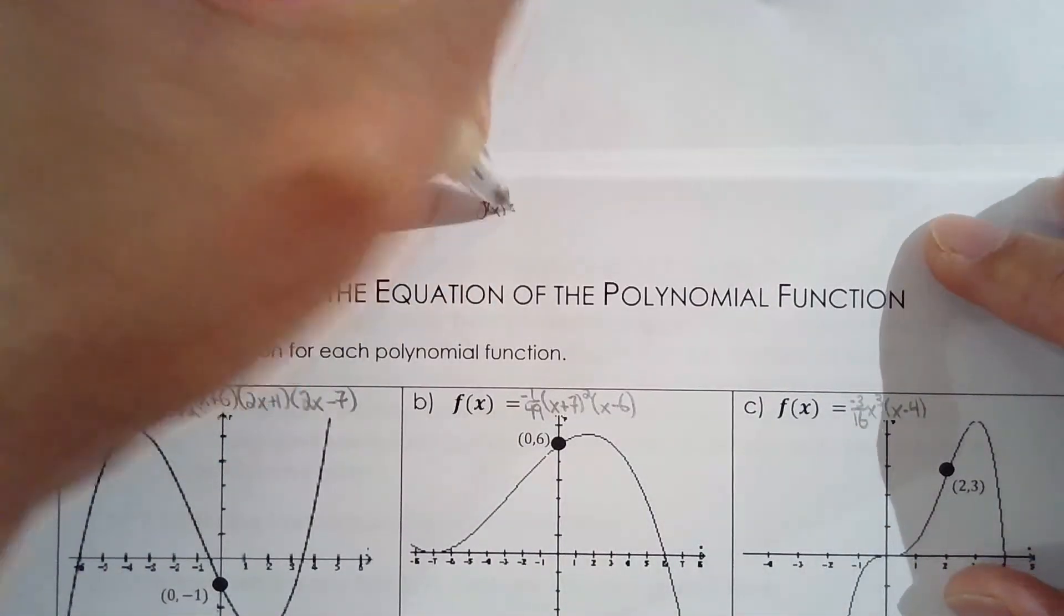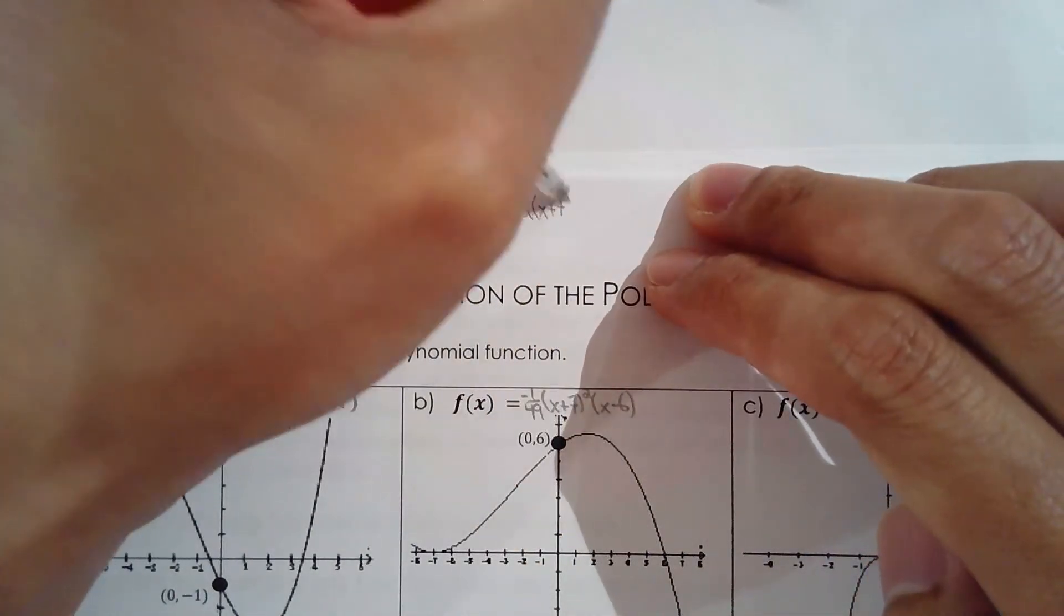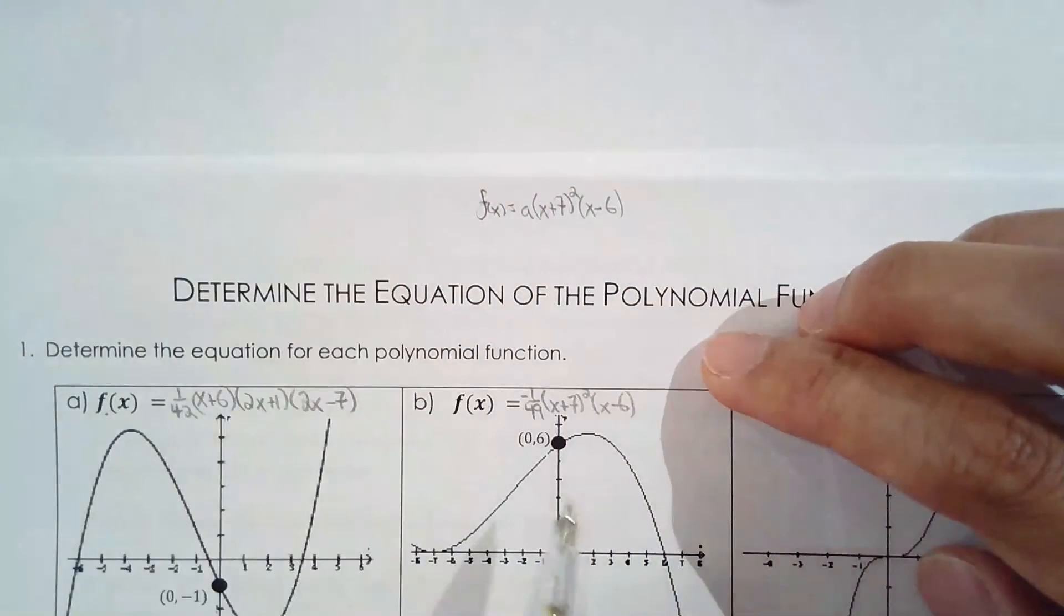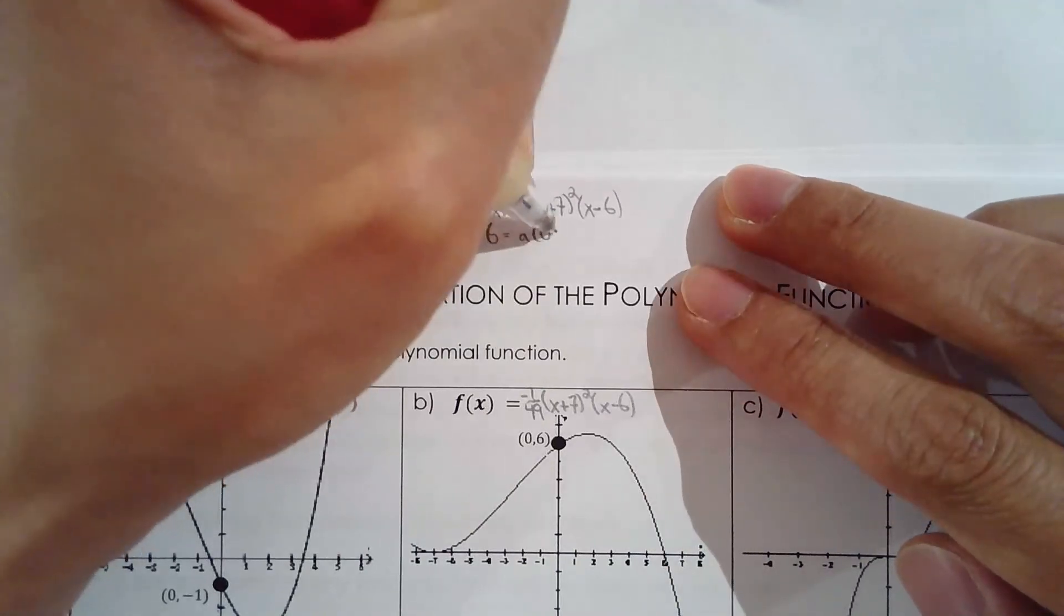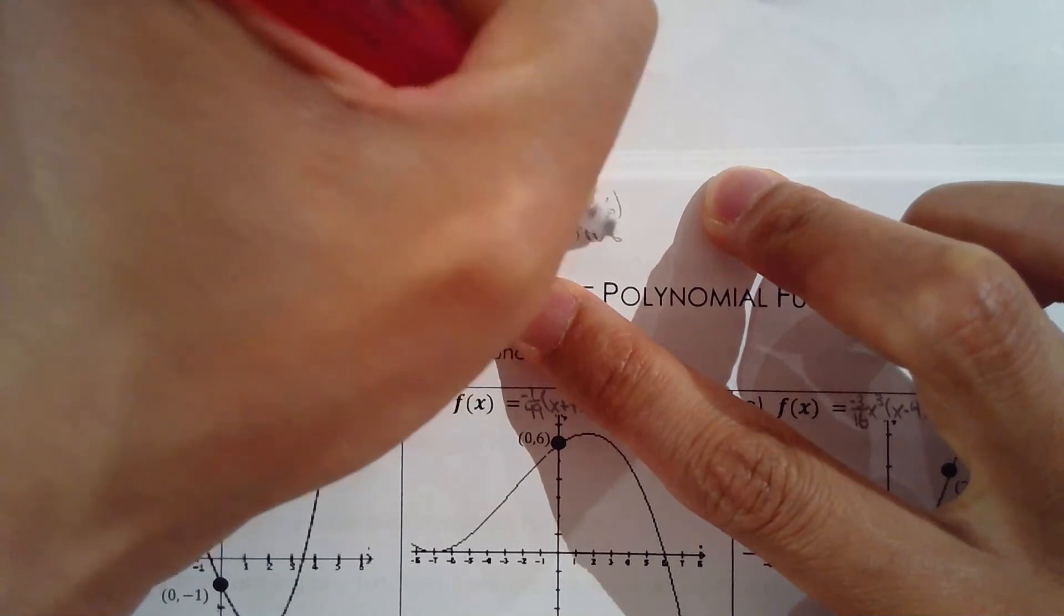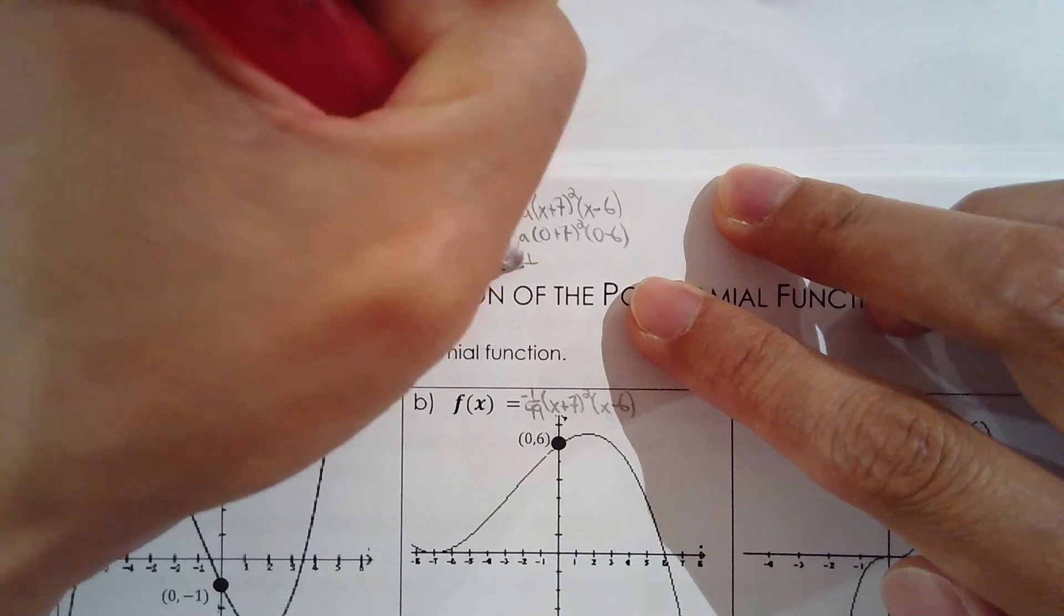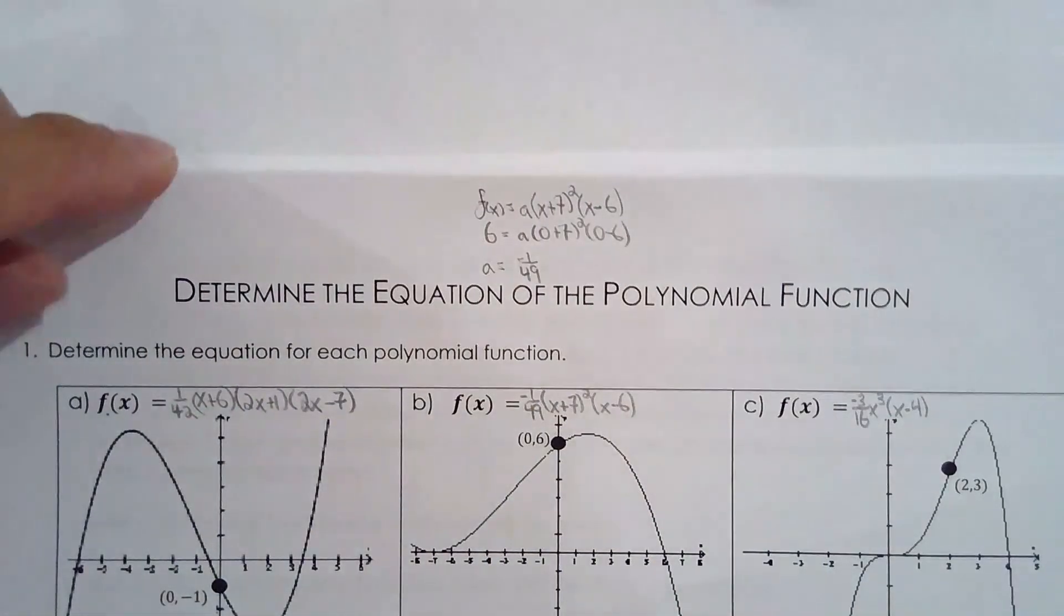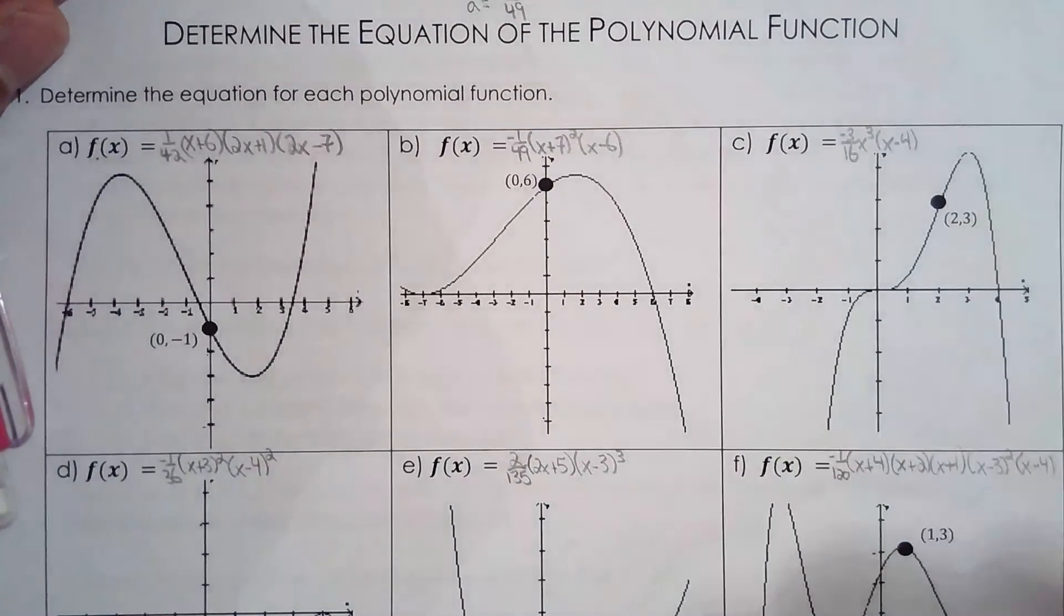So f of x equals, let's use a, times x plus 7 squared, and then x minus 6. So we substitute the point, just like what you would do in grade 10. 6 equals a times 0 plus 7 times 0 minus 6. And you do your algebra and solve for a. And if you do it correctly, you'll get negative 1 over 49. And once you have a, you can write your equation. So that's what I did for all 6.